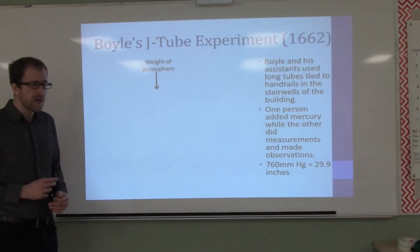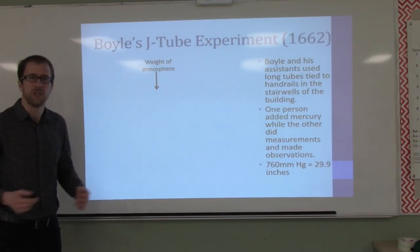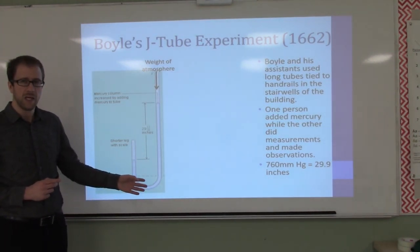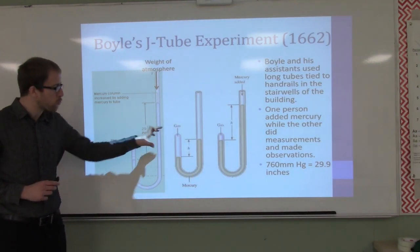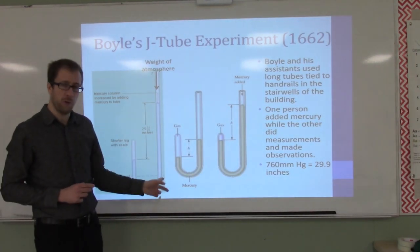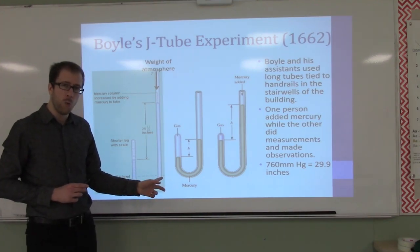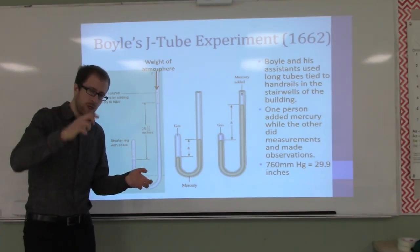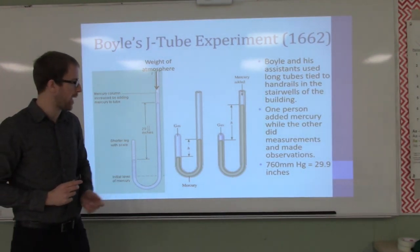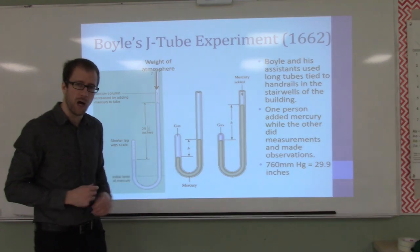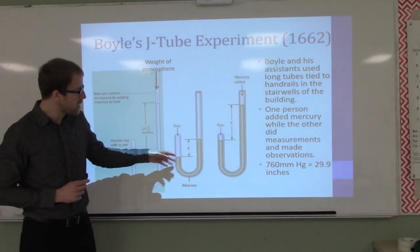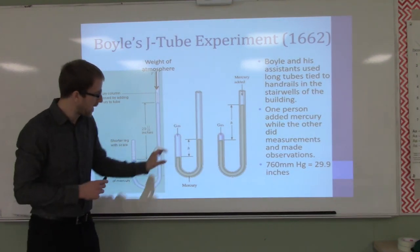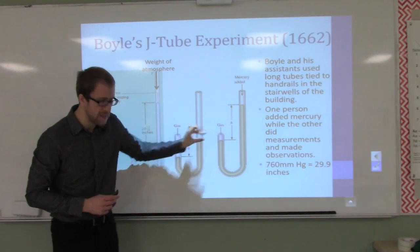How did Boyle determine this relationship? He created an experiment with a series of J-tubes, trapping some gas with mercury. He added more and more mercury and observed the impact on the volume of gas. He found that as he increased the amount of mercury, the volume of that gas decreased.